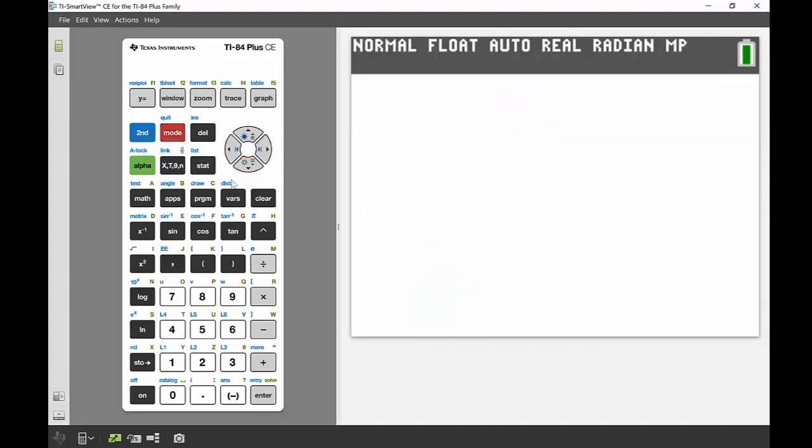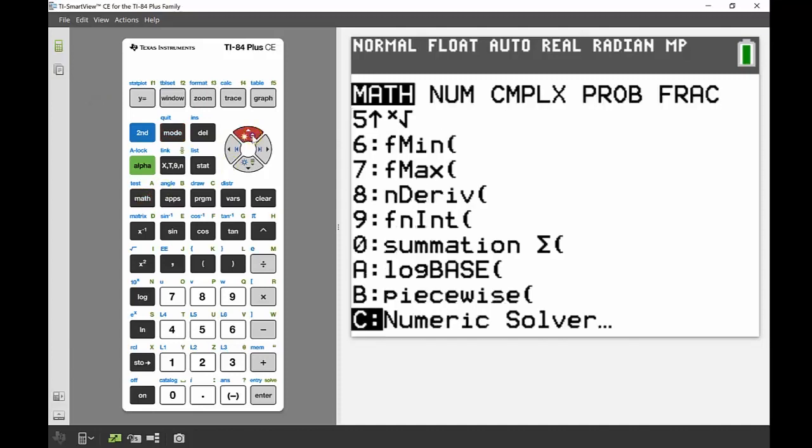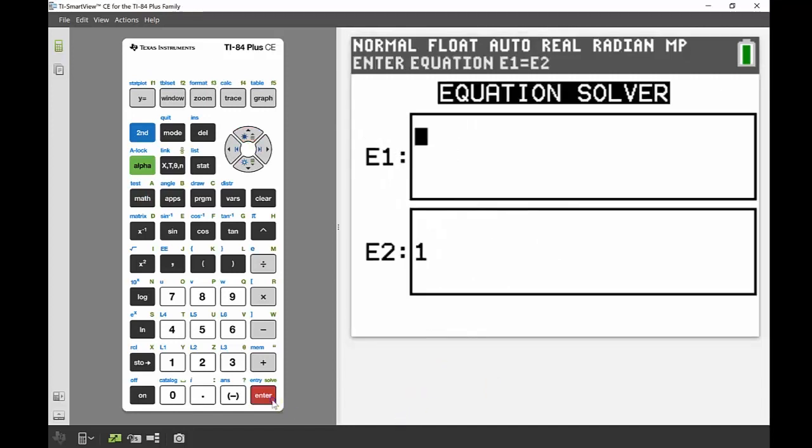The second part of my question asked to solve for my time when my acceleration is equal to one. So now I'm solving an equation for my variable. Best way to do that and what I really like to use is the numeric solver on the calculator. So I'm going to head into my math button. The numeric solver is right at the bottom. So if I use my up key that takes me straight to the very last thing in the menu. And I'm going to press enter on there.